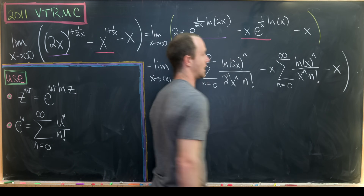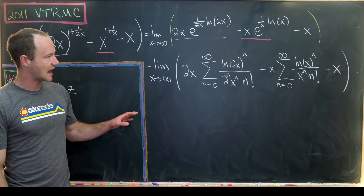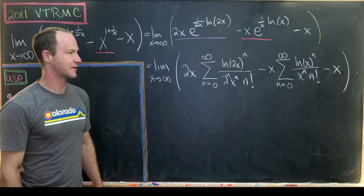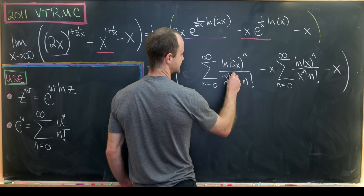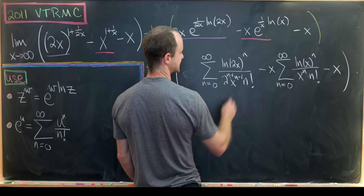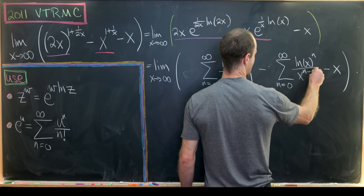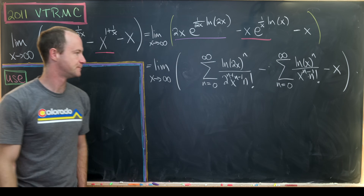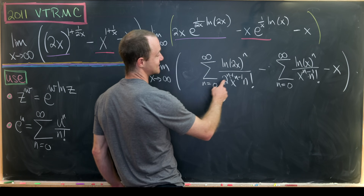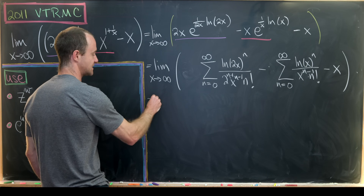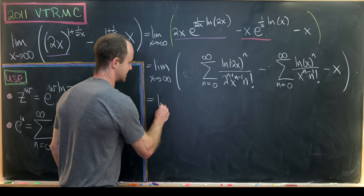And then we subtract x off. Now we do a little simplification: the 2x cancels factors in the denominator, leaving 2 to the (n minus 1) and x to the (n minus 1); similarly, the x cancels leaving x to the (n minus 1). Next, we pull out the zeroth and first terms from each sum and leave the infinite tail starting at the second term.